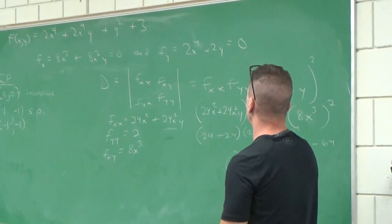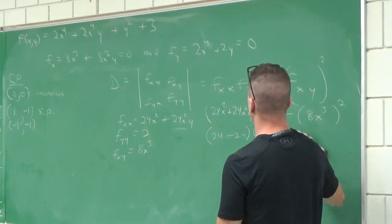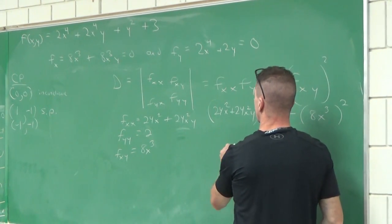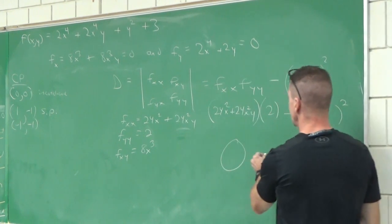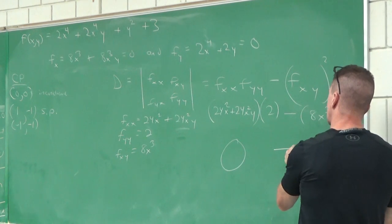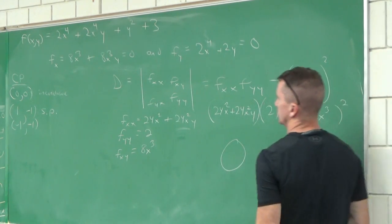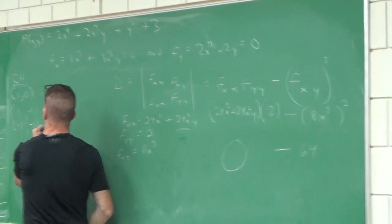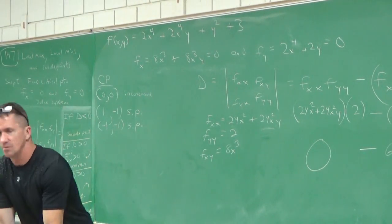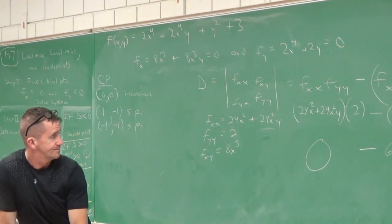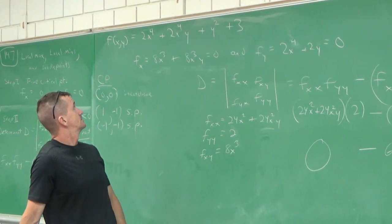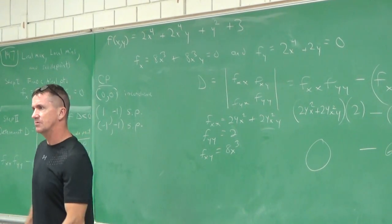What's going on at (-1,-1)? If we plug in (-1,-1), that stays zero. You put in a negative one, you get -8 cubed squared, which is 64. So this is also a saddle point. We end up with two saddle points, but (0,0) was inconclusive. Great job. Any questions on that?